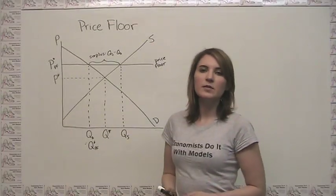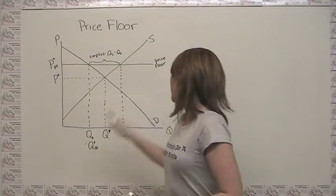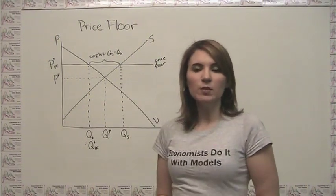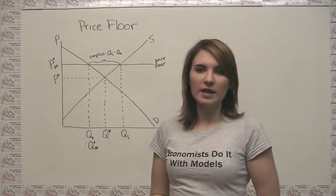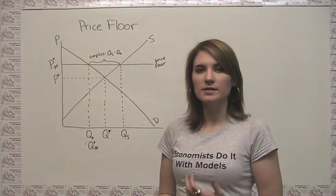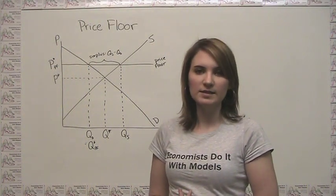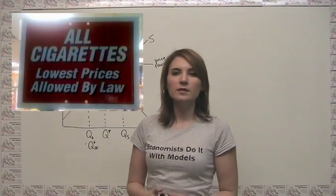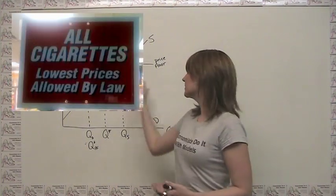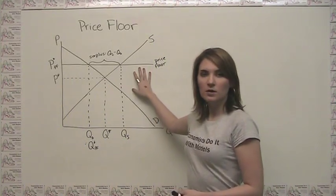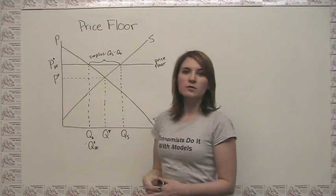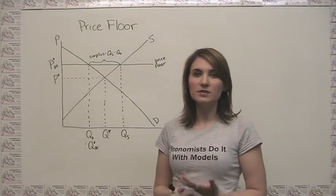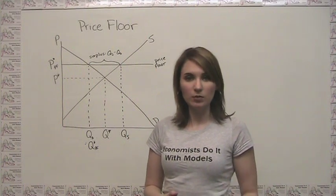So let's examine what happens to the market when we put a binding price floor in place. The example of a price floor I come upon most often is the fact that most states have a legally mandated minimum price for cigarettes, and that legally mandated minimum price is in fact a price floor. You can think about this as what happens to the market for cigarettes when we put this price floor in place.